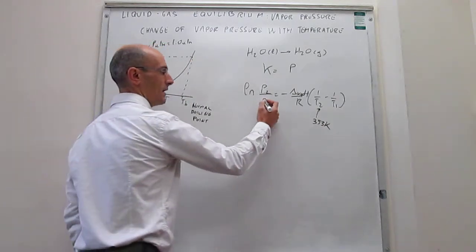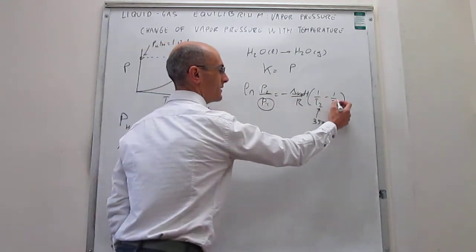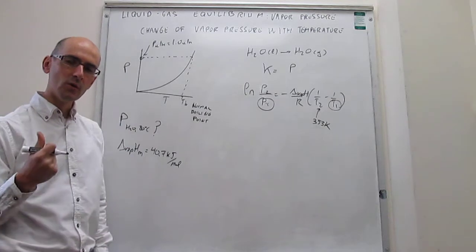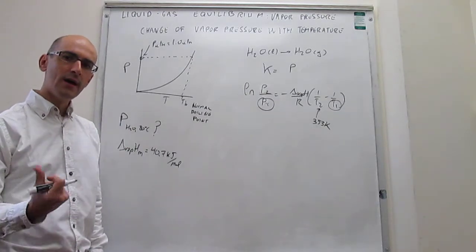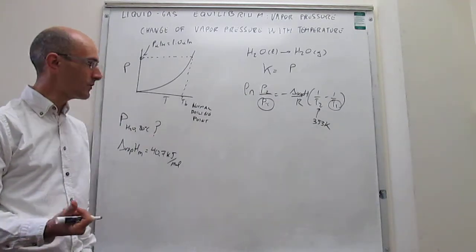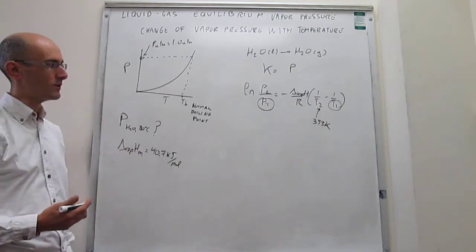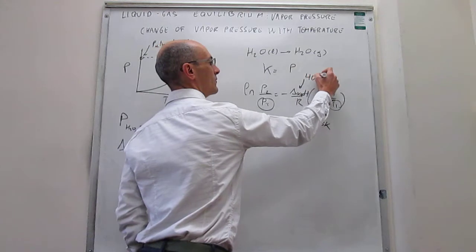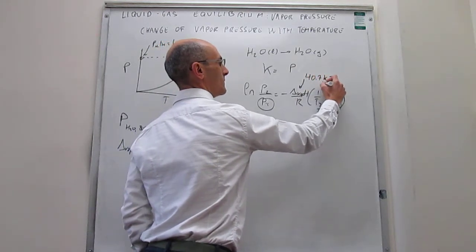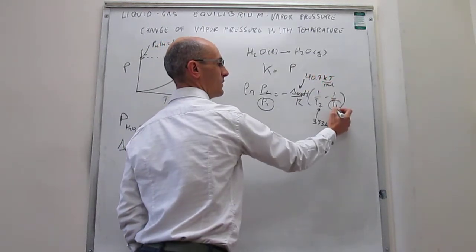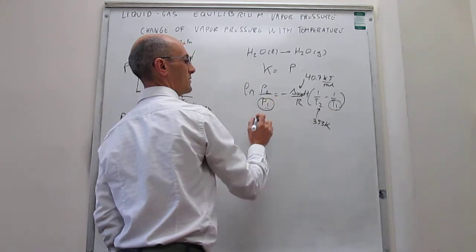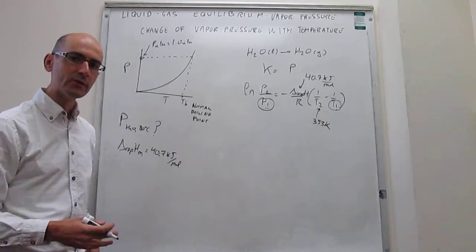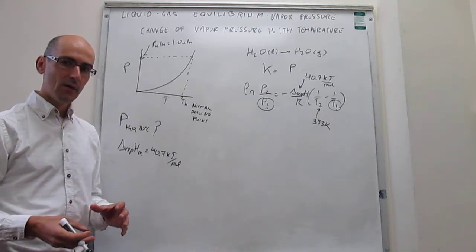But then the problem is that we don't know what P1 and T1 is. Notice that in order to be able to do this, you would need to know the vapor pressure at a particular temperature, and the problem is not giving us that information. We do have the enthalpy of vaporization, which is simply 40.7 kJ per mole. But still, we don't know what this P1 and T1 is. We need to know what the vapor pressure is at a different temperature.